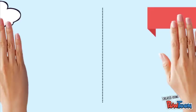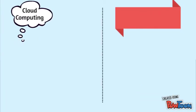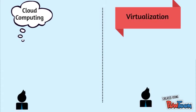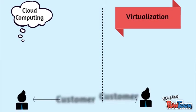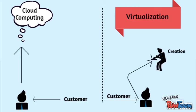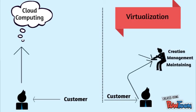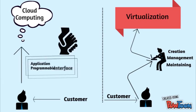In a nutshell, the real big difference between cloud computing and virtualization is the fact that all the control and management activities — that includes creation, management, and maintaining the virtual environment — all these activities have been outsourced to an automated layer that we call API, Application Programmable Interface.